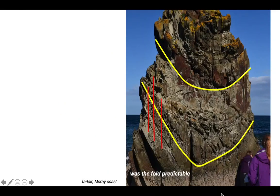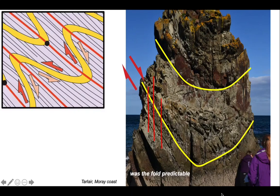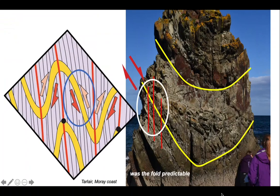Let's go back to this outcrop and ask whether the fold was predictable. There's our bedding in yellow and our cleavage in red. There's the sense of vergence. Take our diagram and rotate it so it's in the correct orientation. We can see that to the right of both observation areas, to the right is a sinform, both in the sketch and in the outcrop.